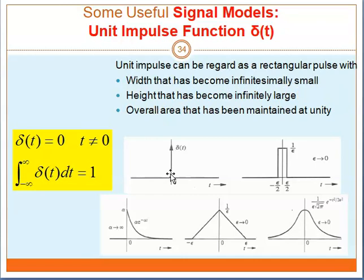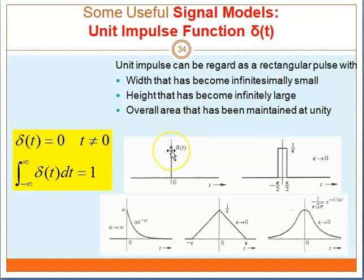A unit impulse can be regarded as a rectangular pulse with a width that has become very, very small. As you can see from the arrow, the width has become very small, the height has become very large, and the area has been maintained at unity, which is 1.